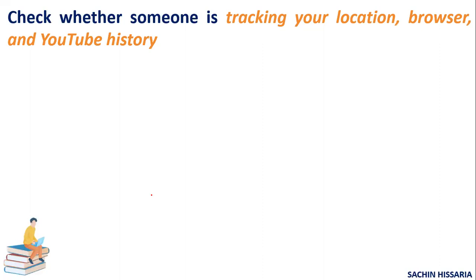Now let's discuss the second point: whether someone is tracking your locations, browser history, and YouTube history. Generally, as a user we use Gmail very lightly. One Gmail account may be open in your laptop, one in the company's laptop, maybe in a friend's phone as well. Sometimes we go to a cyber cafe where we log in to our Gmail but don't log out, thinking there's nothing sensitive in Gmail. But it is very critical. I will now show you how, with the help of a Gmail password, someone can track your location.